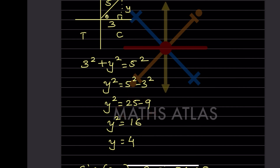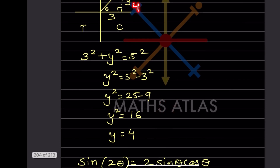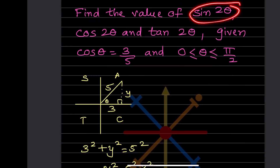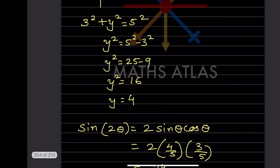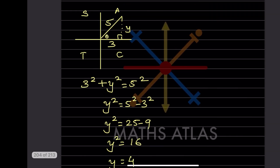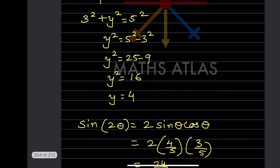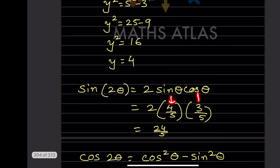Now sin2θ = 2sinθcosθ. Since sinθ = opposite/hypotenuse = 4/5 and cosθ = 3/5, we get sin2θ = 2 × (4/5) × (3/5) = 24/25.